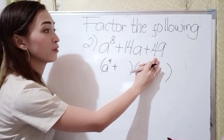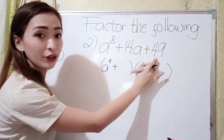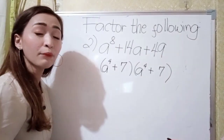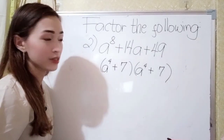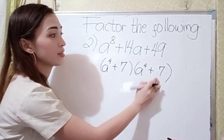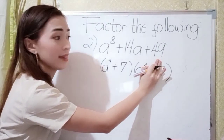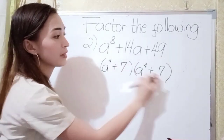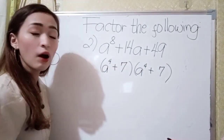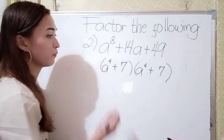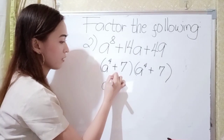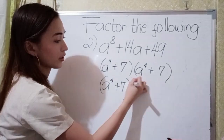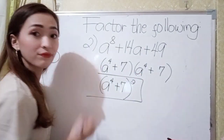Next, what is the square root of 49? The square root of 49 is 7. Think of a number — if you multiply it by itself, the answer is 49. So that is 7, because 7 times 7 is 49. And if you add them, the answer is positive 14: 7 plus 7 is 14. So our answer in simplified form is a to the 4th power plus 7, squared. That is our final answer.